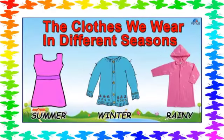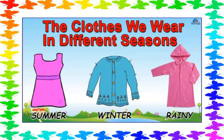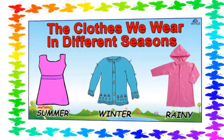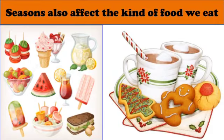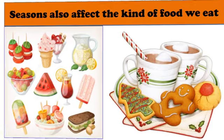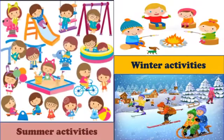Change in season affects the kind of clothes we wear. For example, we wear cool cotton clothes in summers and warm woolen clothes in winters. Season also affects the kind of food we eat, as we like to drink juices in summers and hot drinks in winters. In the same way, season also affects the kind of activities we do.